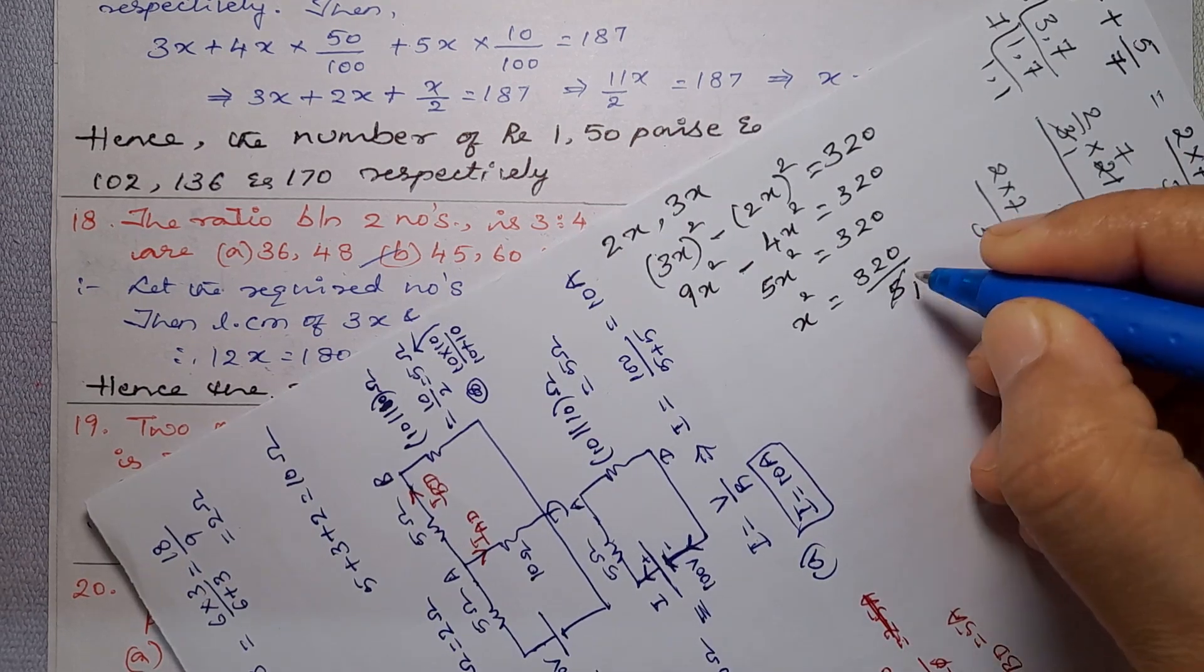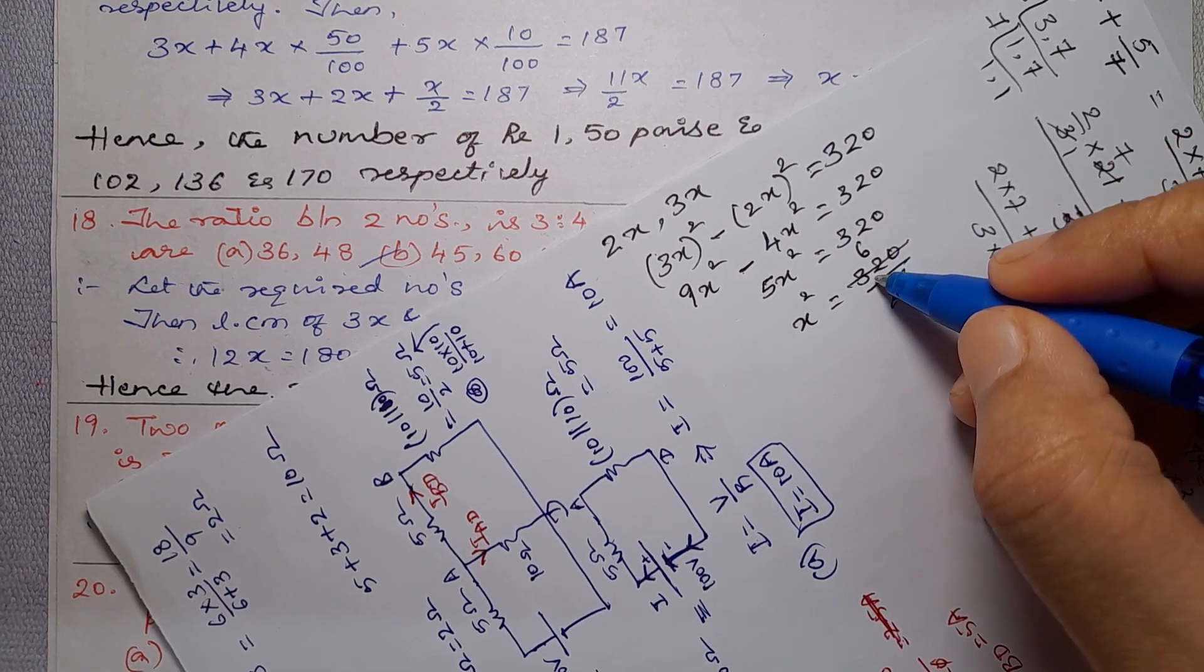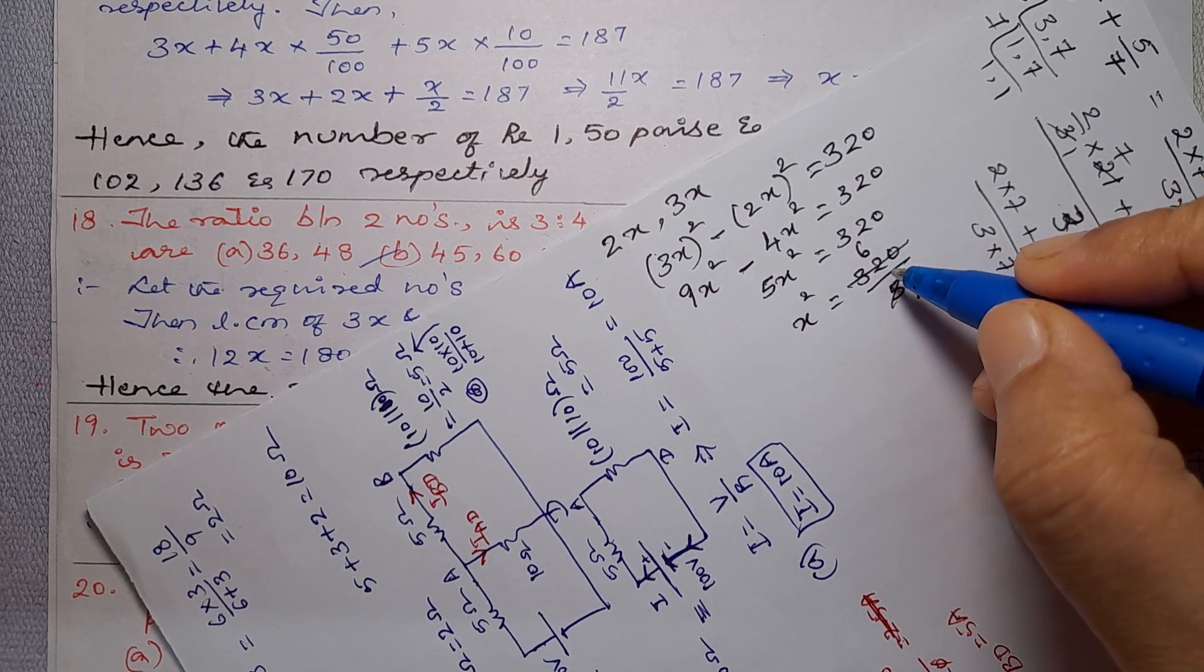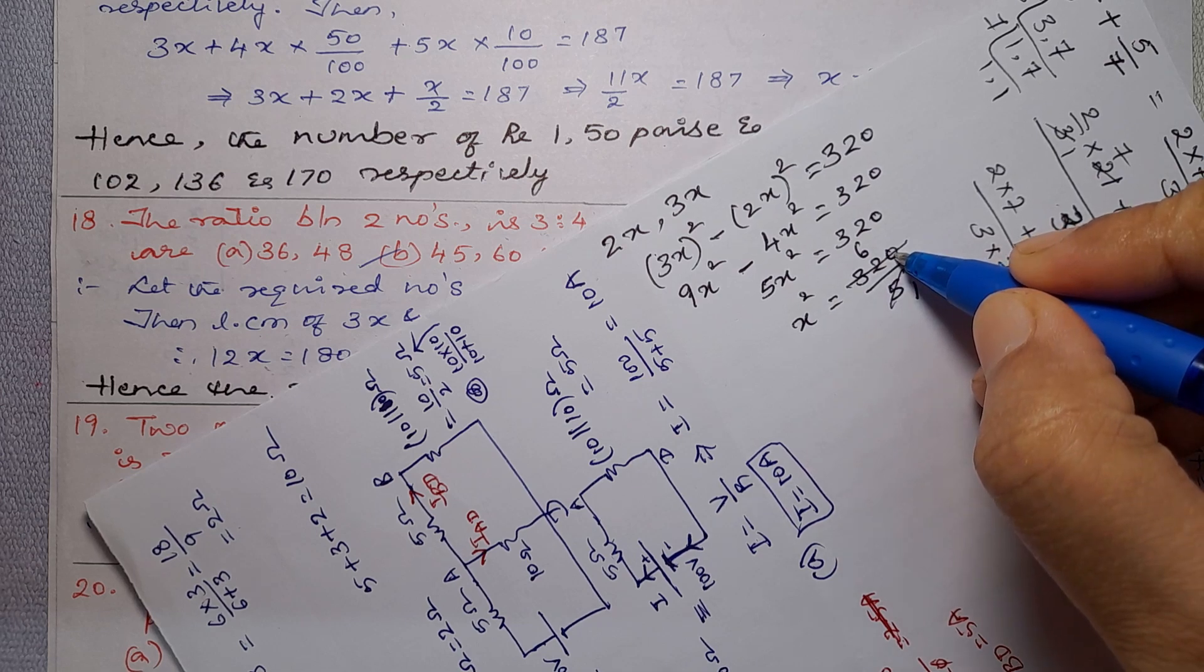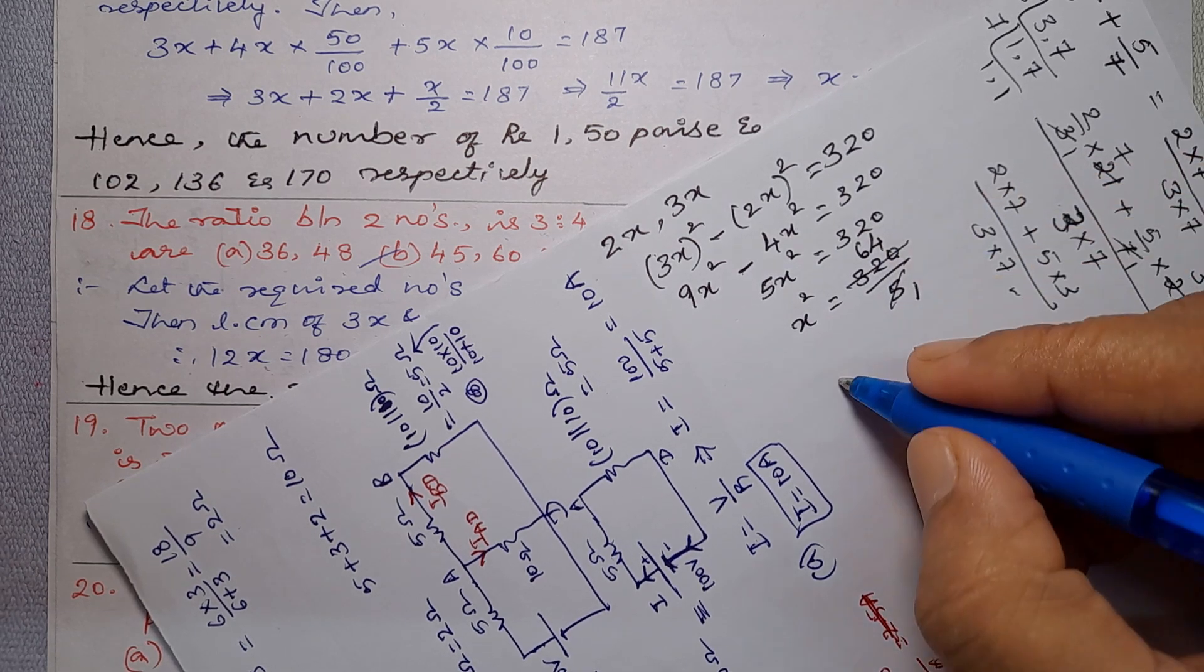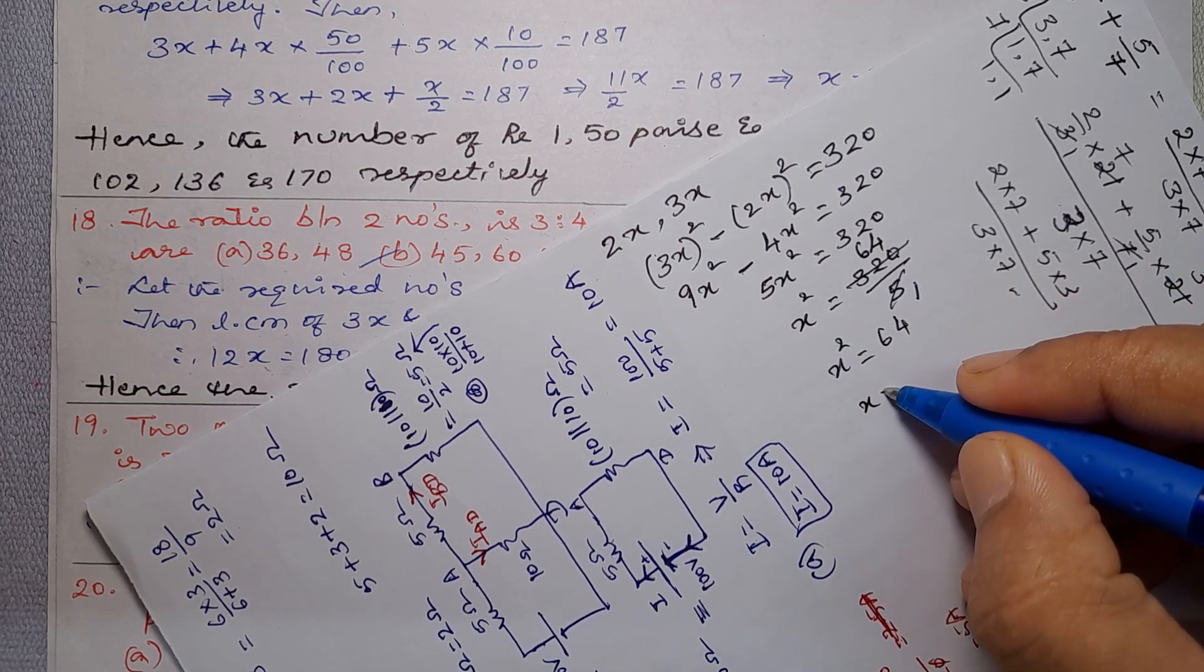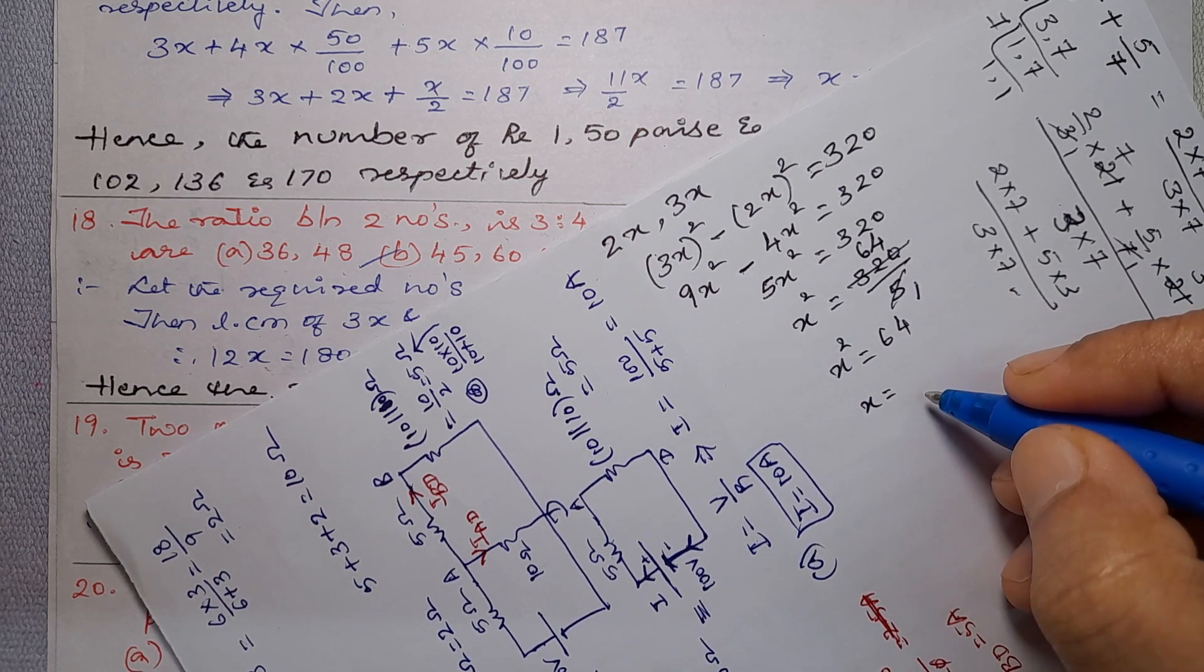Then x square equal to 320 divided by 5. So 5 into 64 is 320, which gives us 64. So x square equal to 64, then x equal to plus or minus 8.